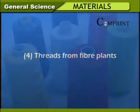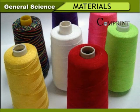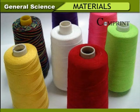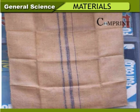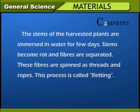Threads from fiber plants: We use ropes, strings, and bags in our everyday life — we get all these from plant fibers. Jute fiber: We store rice and sugar in gunny bags, which are made up of jute. Jute is mainly cultivated in India. The stems of harvested plants are immersed in water for a few days; stems become soft and fibers are separated. These fibers are spun into threads and ropes — this process is called retting.